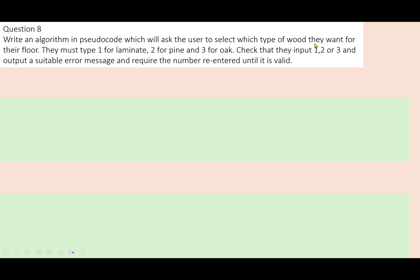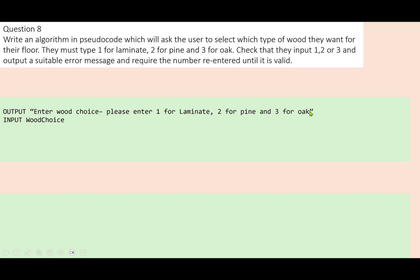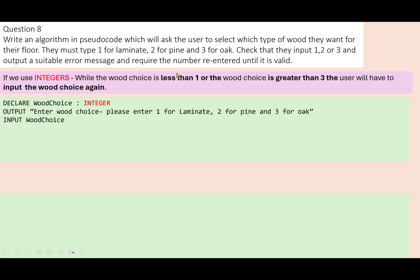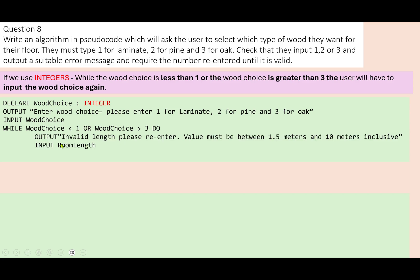Write an algorithm in pseudocode which asks users to select which type of wood they want for their floor. They must type 1 for laminate, 2 for pine, 3 for oak. Check that the input is 1, 2, or 3 and output a suitable error message, requiring the number to be re-entered until valid. We output the instructions, input the choice, and set it up as an integer. Our rule: while the wood choice is less than one or the wood choice is greater than three, they have to input it again. While wood choice is less than one or wood choice is greater than three, do — give them an error message, tell them what they have to do, and input the variable again.